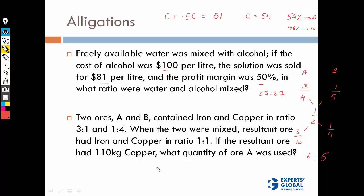So if 110 kg is copper, total is 220 kilograms. The ratio is 6:5. Let's assume they are 6K and 5K respectively. 6K + 5K = 220.